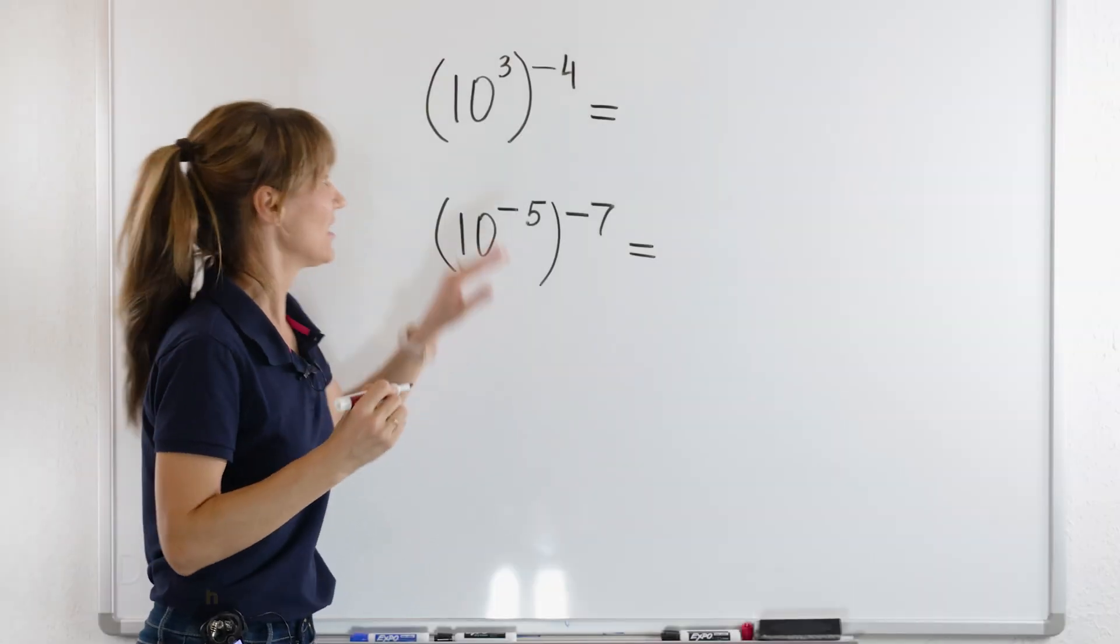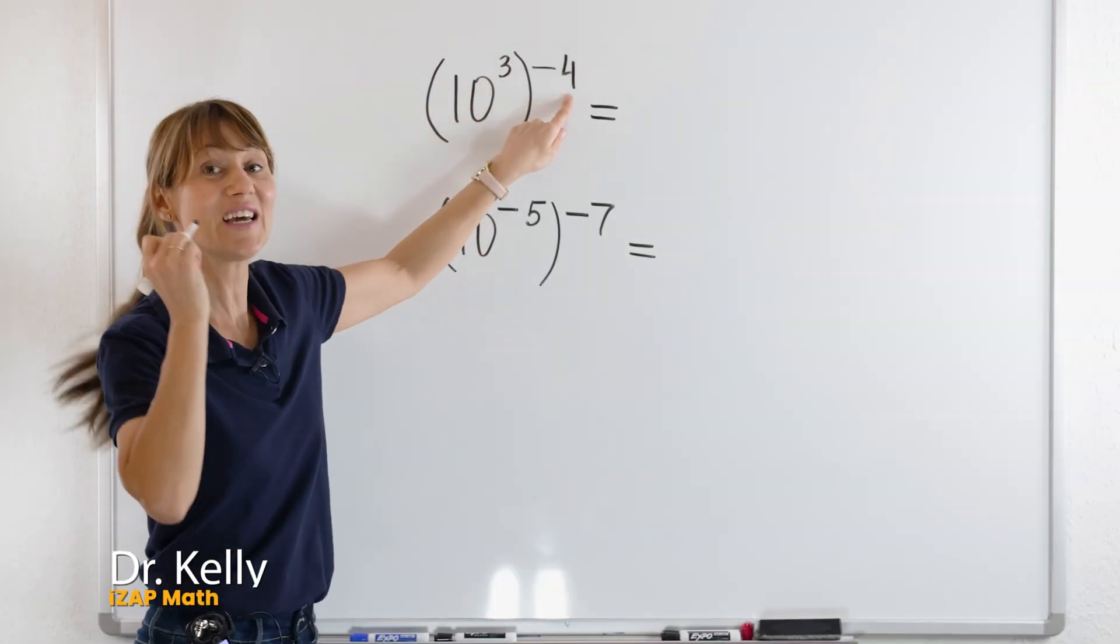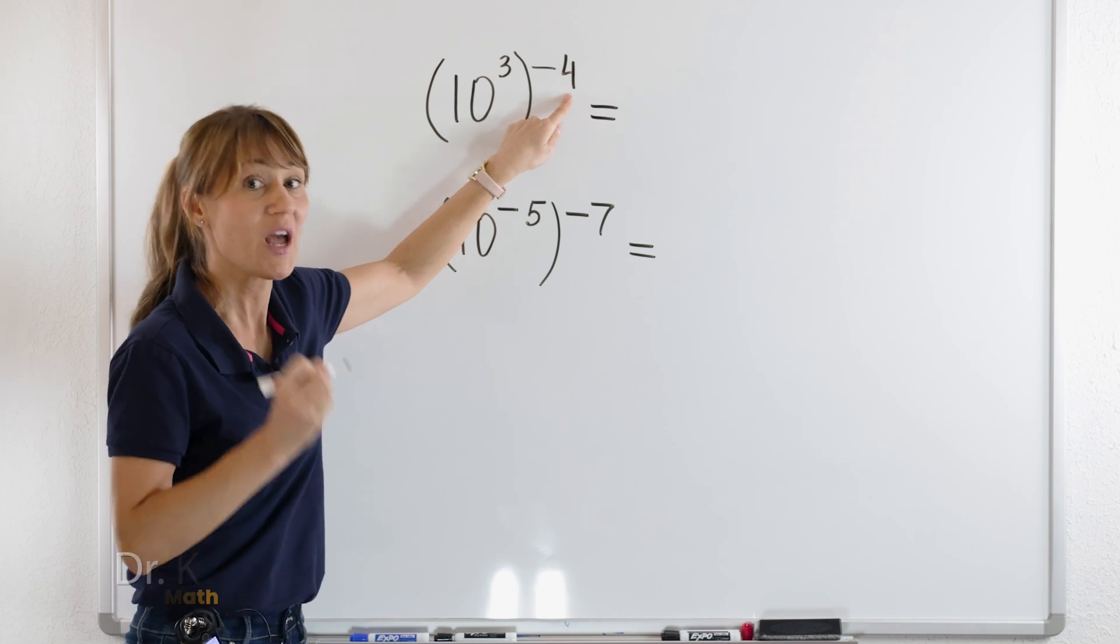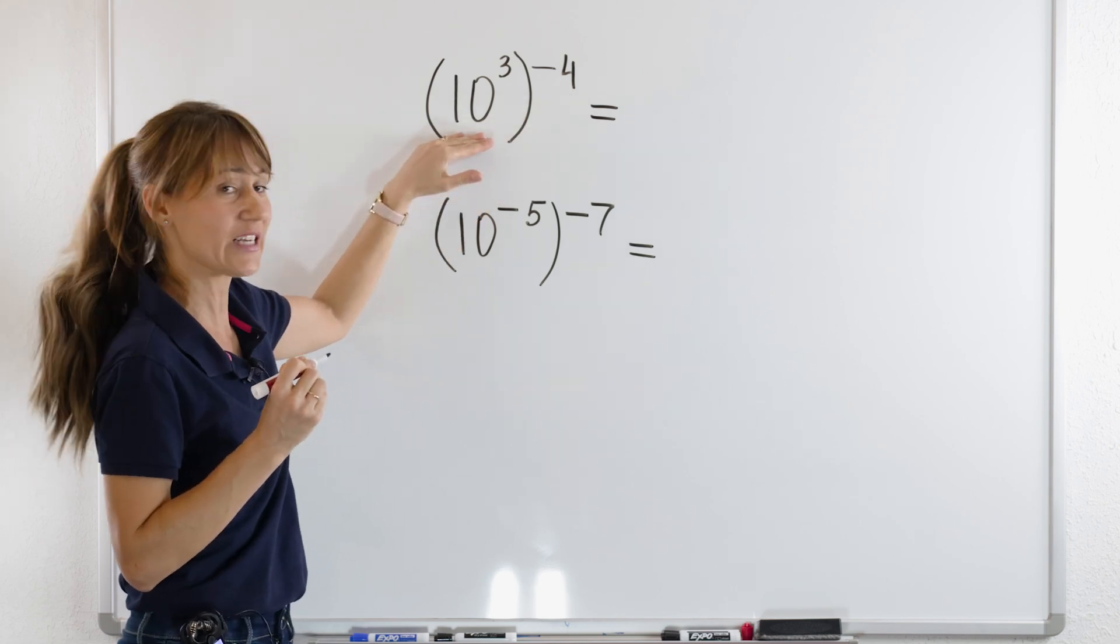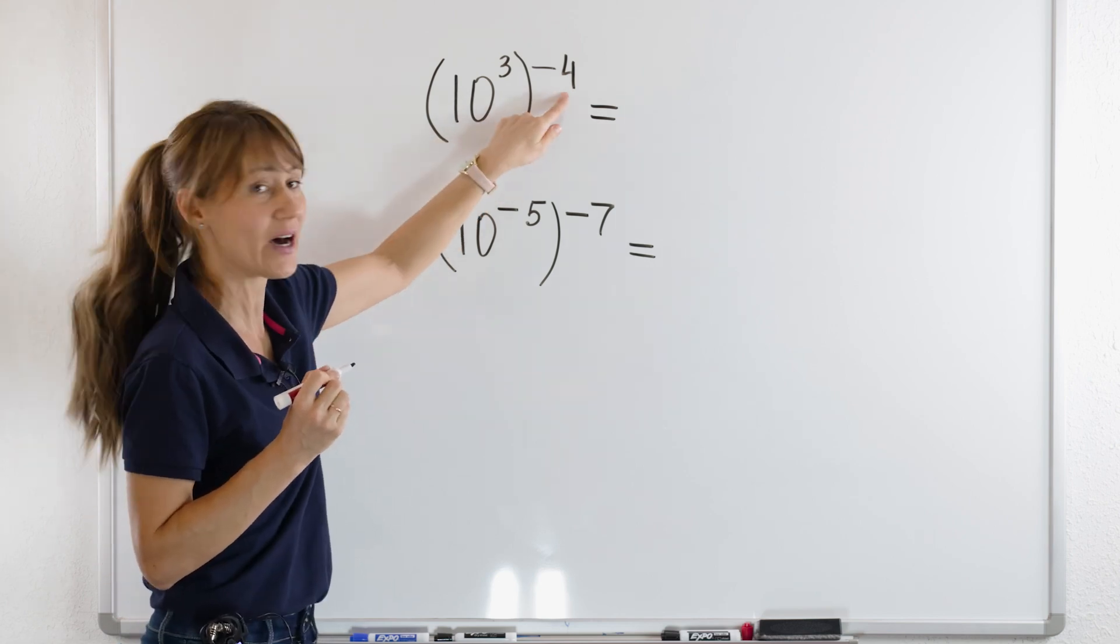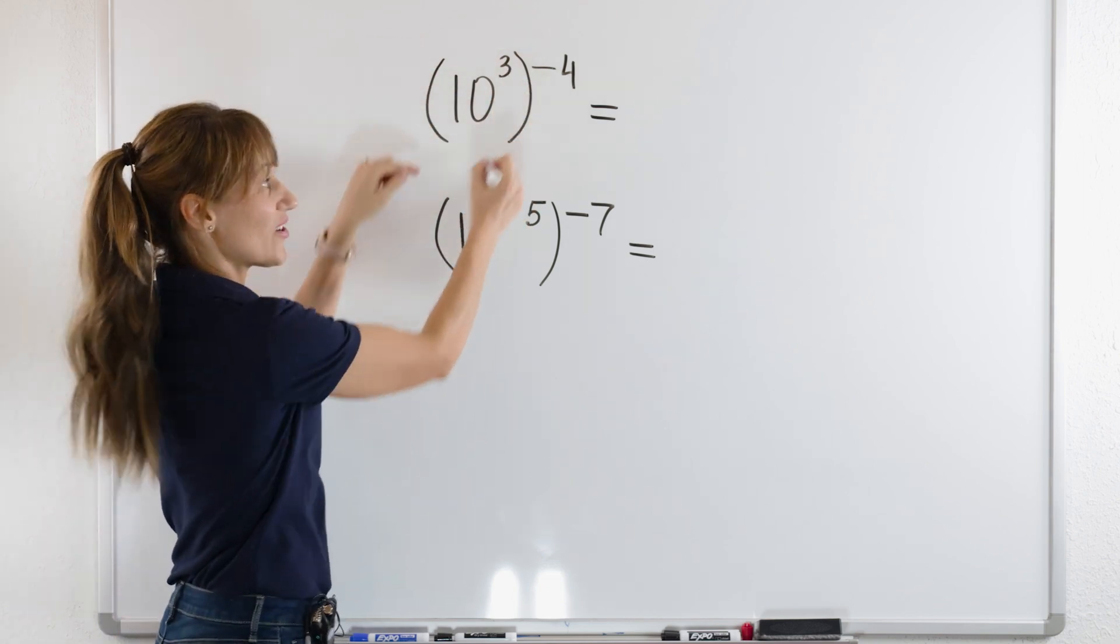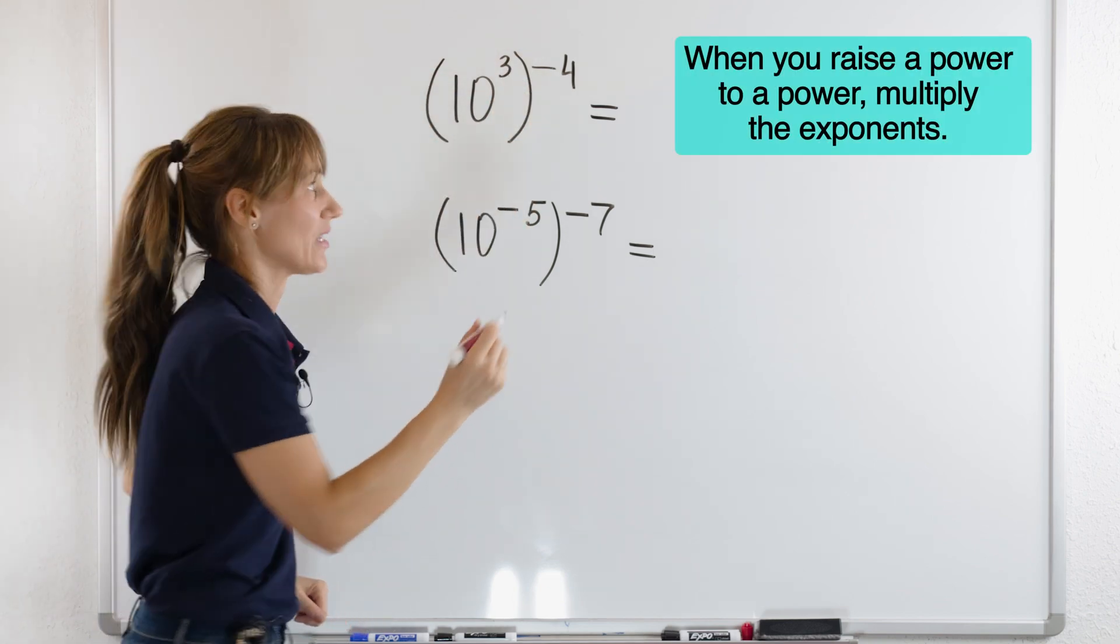Look, we are raising 10 to the power of 3 to another power. So, when you are raising an exponential expression to another power, you see, we have parentheses, you will multiply the exponents.